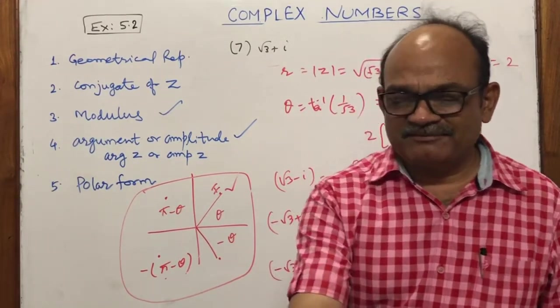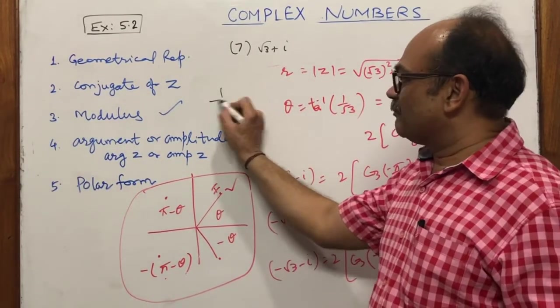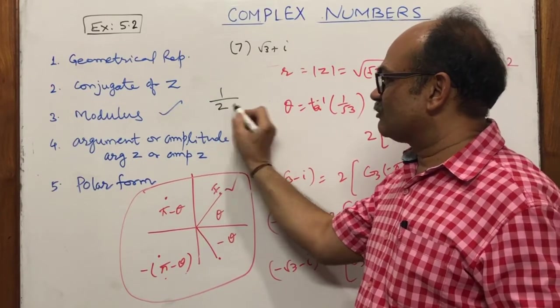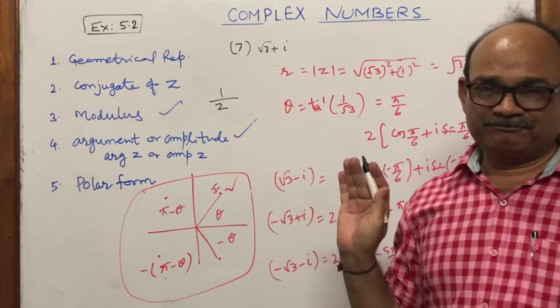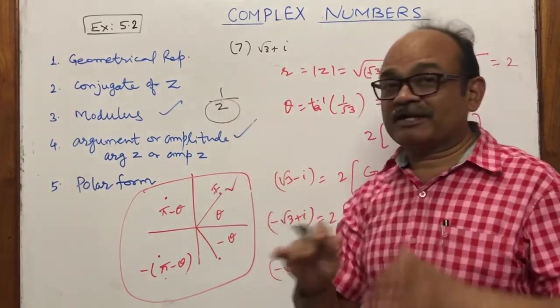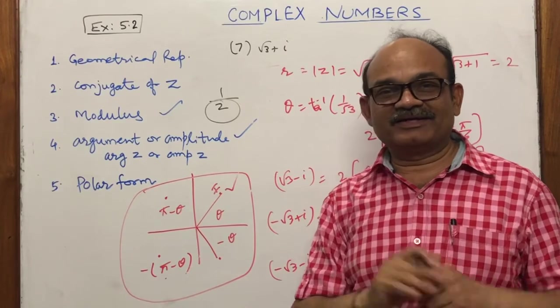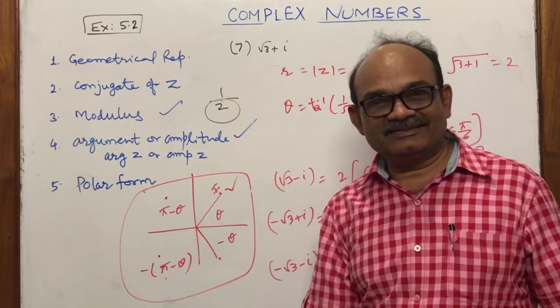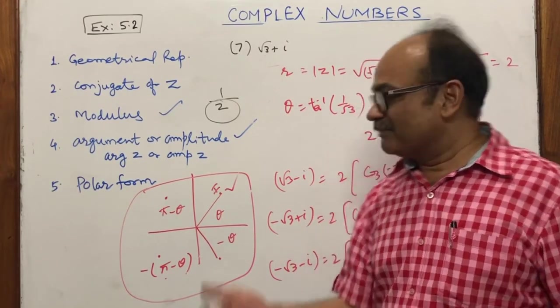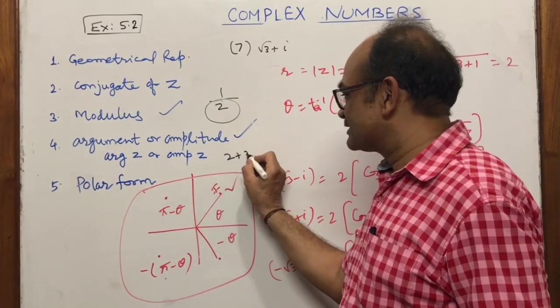The multiplicative inverse of a complex number means 1 divided by that complex number. Since we don't want iota in the denominator, we need to rationalize. For example, the multiplicative inverse of 2 plus 3 iota requires multiplying numerator and denominator by the conjugate 2 minus 3 iota.